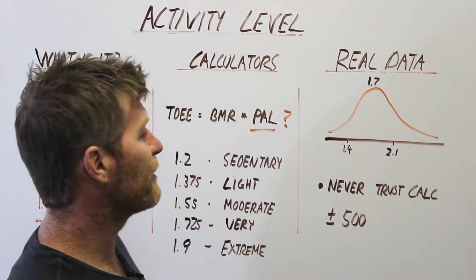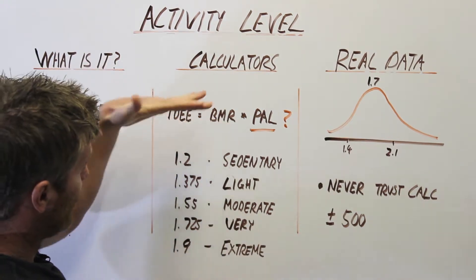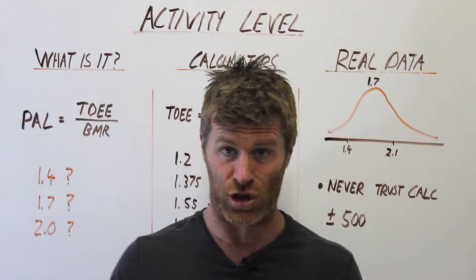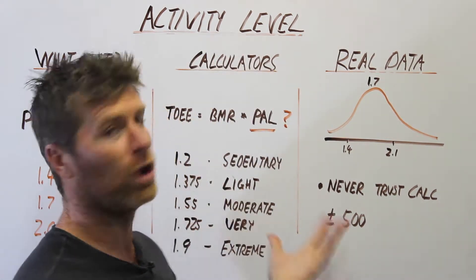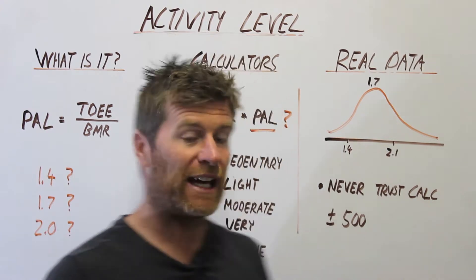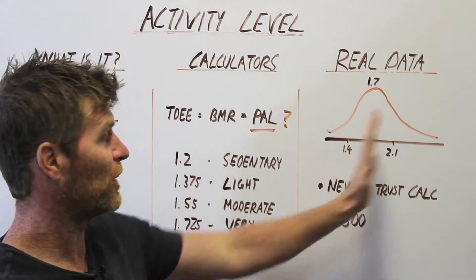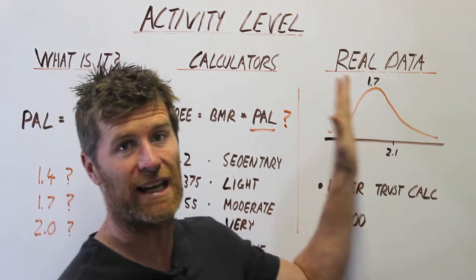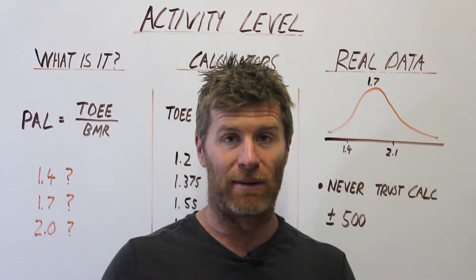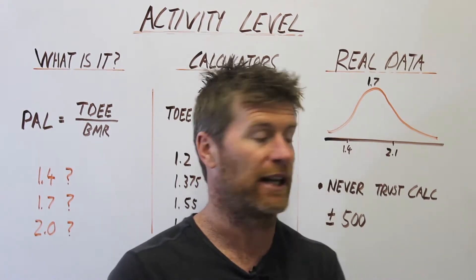The interesting thing is people will tell you that activity levels are constrained between 1.2 and 1.9, but when you look at a true data set, they are all over the place from 1.1 up to 2.5. A good 15–20% of the sample is beyond 1.9 — way out beyond 2. People are a lot more active than online calorie calculators would have you believe.